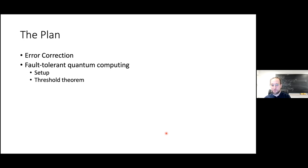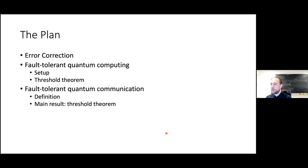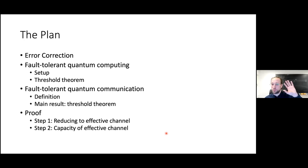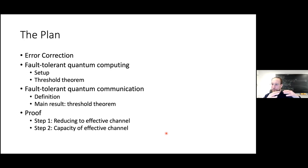The plan: first we discuss quantum error correction, then we look at the fault-tolerant quantum computing setup and the key result — the threshold theorem, which says there is a noise threshold below which errors can be arbitrarily suppressed. Then we define fault-tolerant quantum communication, state our main theorem — an analogous threshold theorem — and sketch the proof, which reduces the noisy setup to an effective channel and analyzes its capacity.